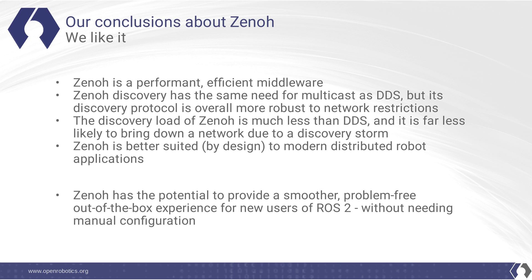Our conclusions about Zenoh: basically, we like it. It's performant and efficient as a middleware. While distance-based discovery has the same need for multicast as DDS for zero-configuration discovery, its discovery protocol is overall more robust to network restrictions because it only uses a very small amount of multicast before switching to unicast and then TCP. The discovery load of Zenoh is much less than DDS and it is far less likely to bring down a network due to a discovery storm. It's better suited by design to modern distributed robot applications — for example, a fleet of robots in a warehouse talking to a fleet management system in the cloud over the internet. We think Zenoh has the potential to provide a much smoother, problem-free out-of-the-box experience for new users of ROS2 without needing manual configuration. New users who come to ROS2 will find that it works well for them, and once they understand their needs, they can choose a middleware that matches their specific requirements.